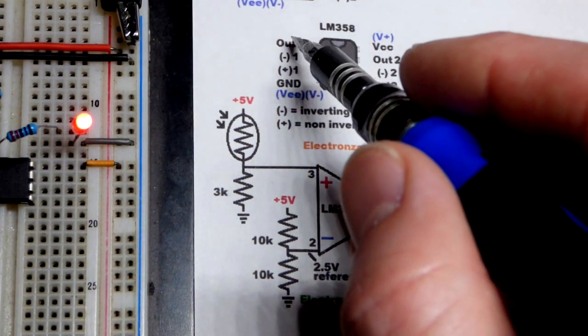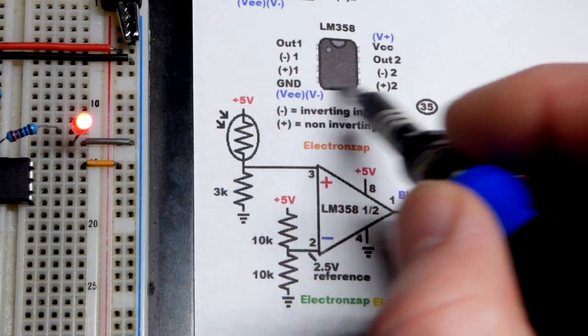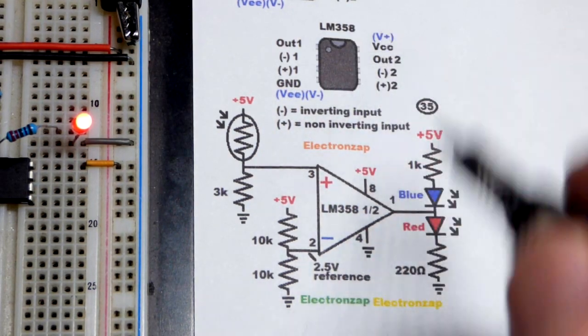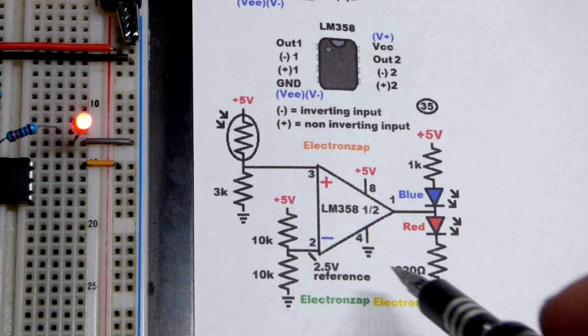Pin 1 starts at the top left, works its way down to 4, jump across to 5, work your way up to 8. So I got the pin numbers on there.